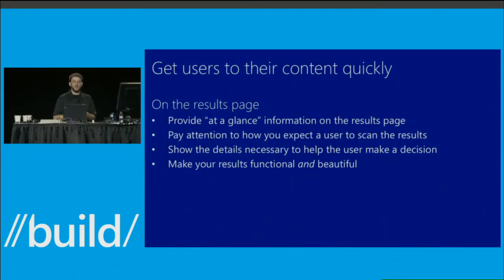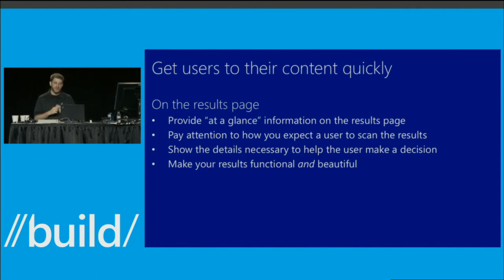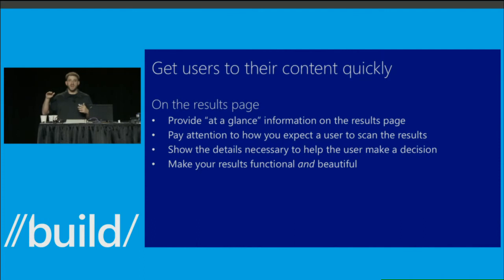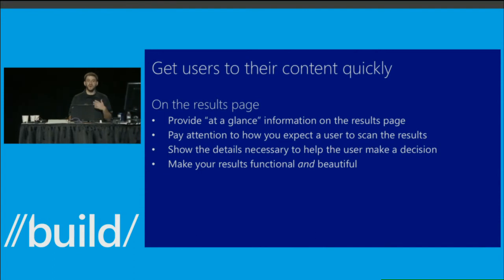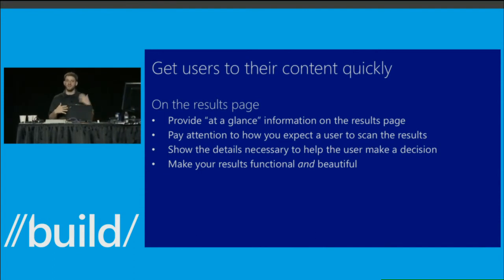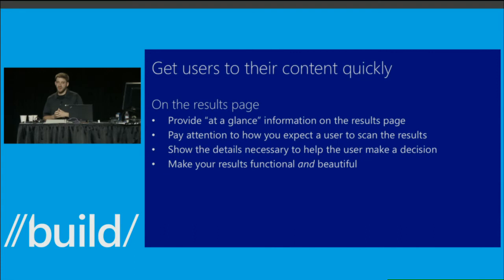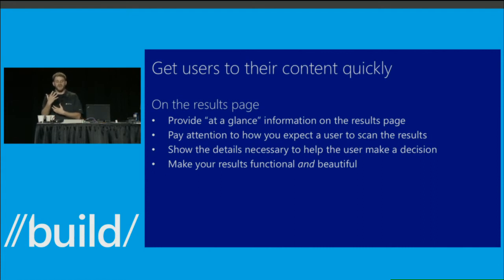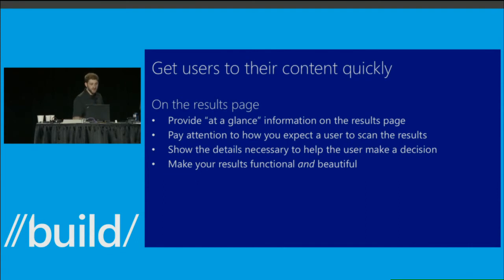This is the exact principle we took when designing the heroes and the whole smart search layout: what information can we give you at a glance, and how can we make scanning help you get to the right result faster? When thinking about your results pages: provide at-a-glance information so users don't have to drill in; pay attention to scan pattern so users moving through results methodically see what you want them to see in the right order — and you don't need eye tracking for this, just see how long it takes someone to absorb your search results; and show the necessary details to help users make the right decision on the first try.